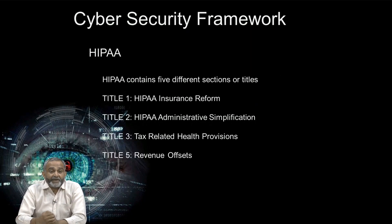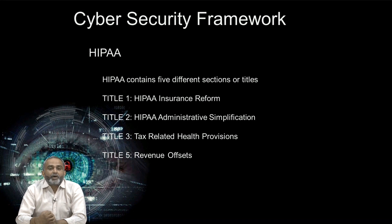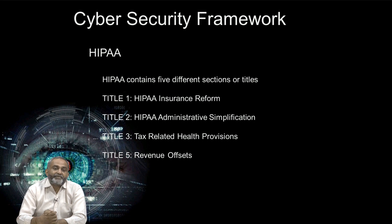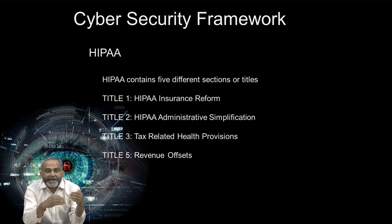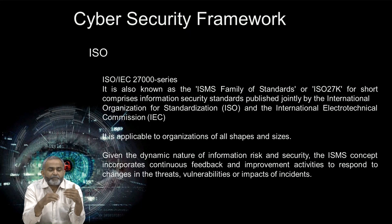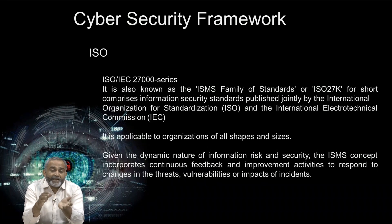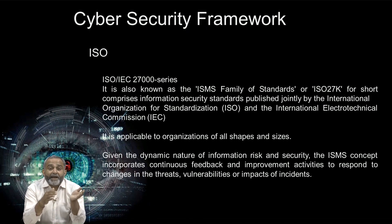HIPAA contains five different sections. Title 1: HIPAA Insurance Reform. Title 2: HIPAA Administrative Simplification. Title 3: Tax-related health provision. Title 4 and Title 5: Revenue offset. As far as cybersecurity is concerned, Title 2, HIPAA Administrative Simplification, is very important. Whenever one organization is providing or transferring patient's information to another organization, the simplification is also important and it should not come at the cost of the privacy of the individual.